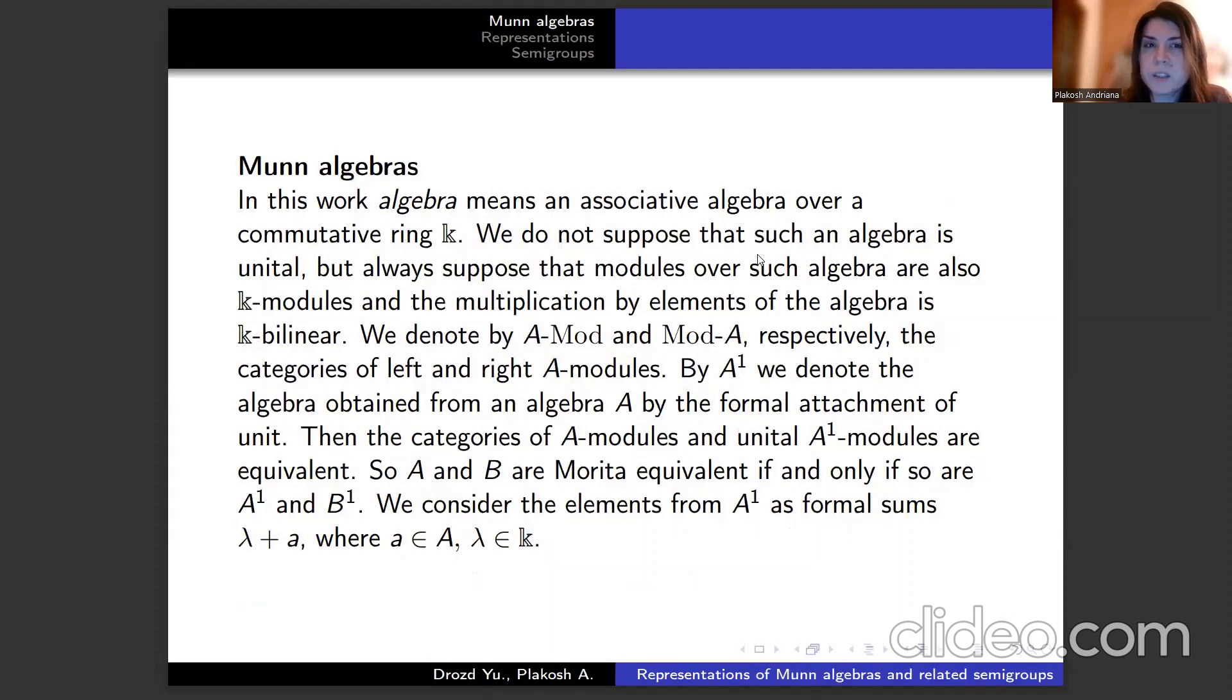In this work, algebra means an associative algebra over a commutative ring k. We do not suppose that such an algebra is unital, but always suppose that modules over such algebra are also k-modules and the multiplication by elements of the algebra is k-bilinear. We denote by A-mod and mod-A respectively the categories of left and right A-modules.